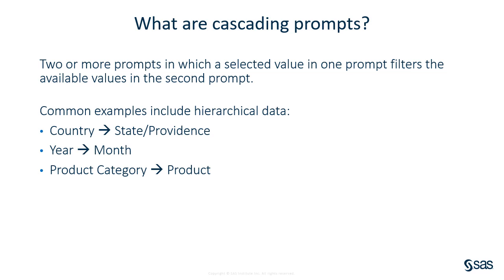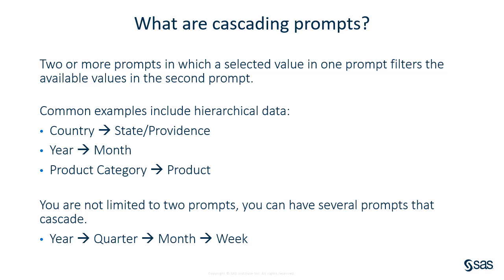In the third example, this can be applied to your own business data structure, taking a larger grouping and then filtering to a more detailed level. With cascading prompts, you are not limited to only two prompts — you can have any number of prompts that filter each other. Here I've listed a time hierarchy, but you could apply this to your own data needs.